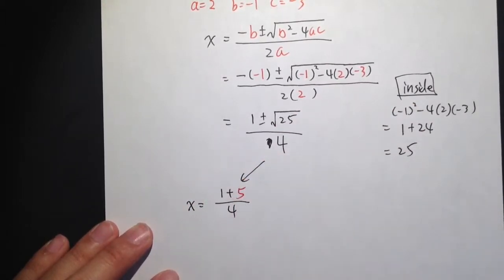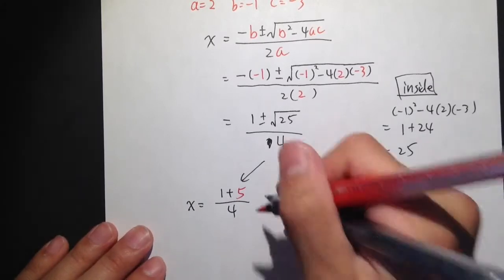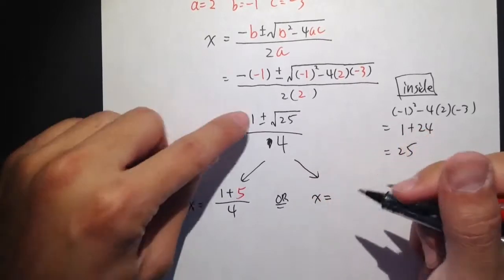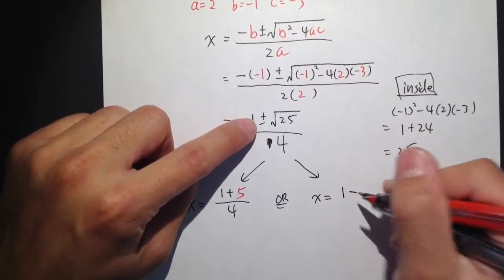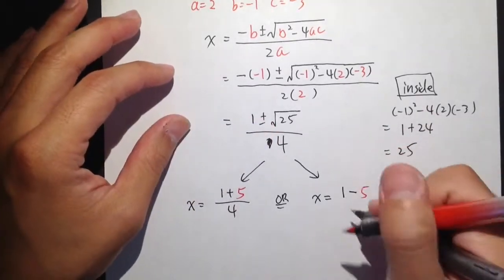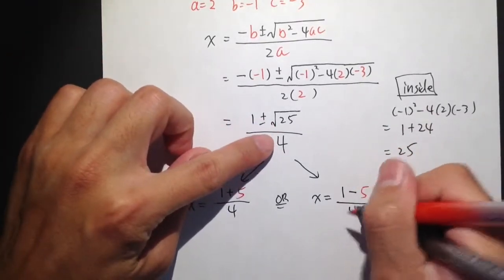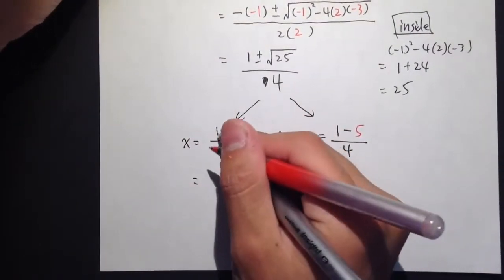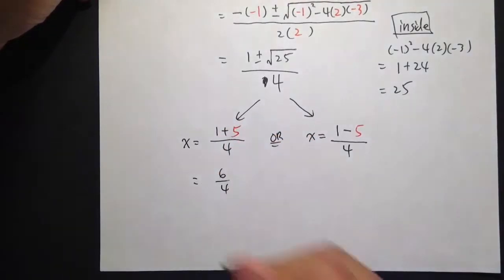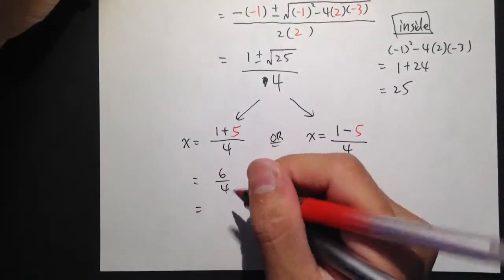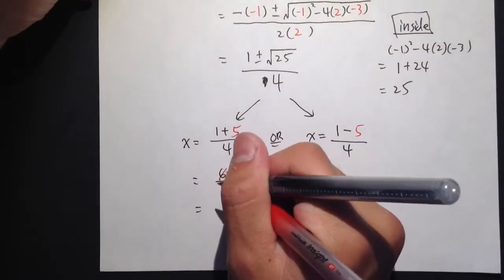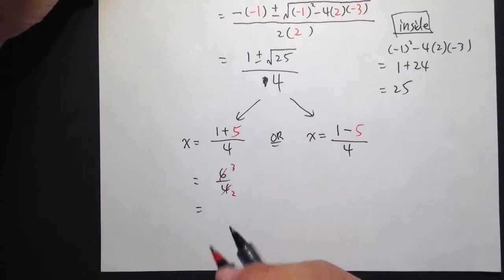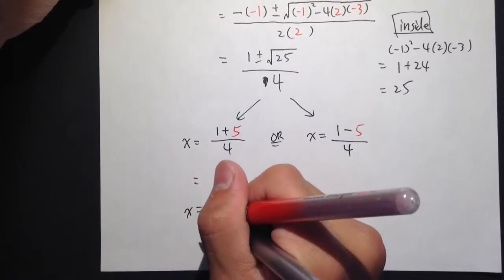X is equal to that as one of the possibility. Or another case, it will be x equals to 1 but minus 5 over 4. And once we write down these two, we can just work this out. 1 plus 5 is 6 over 4. And of course, 6 over 4, we can reduce that. 2 goes into 6, 3 times. 2 goes into 4, 2 times. So the first answer is x is equal to 3 over 2.